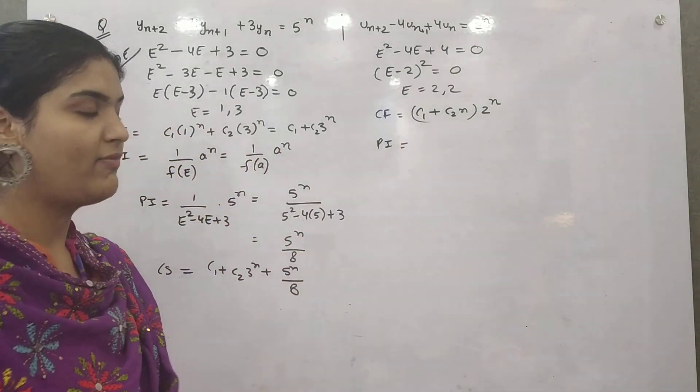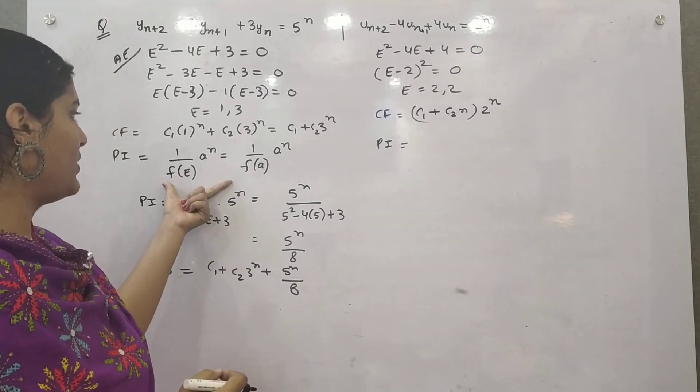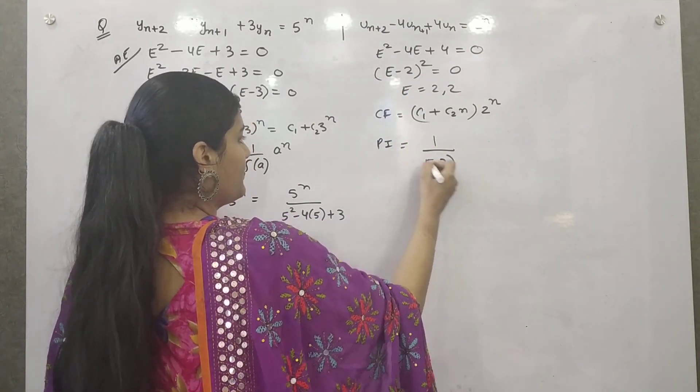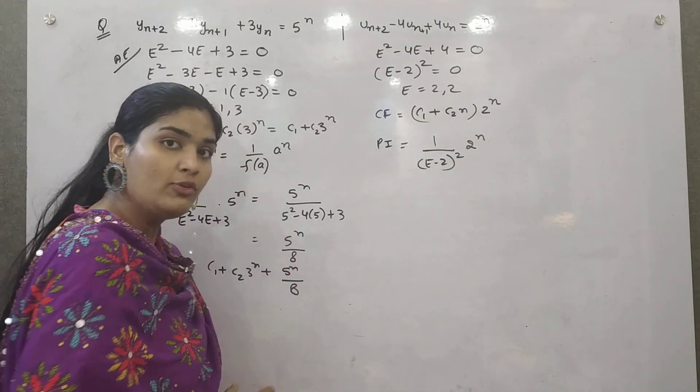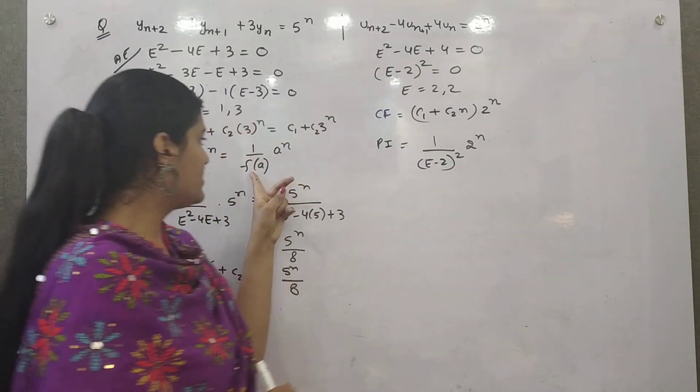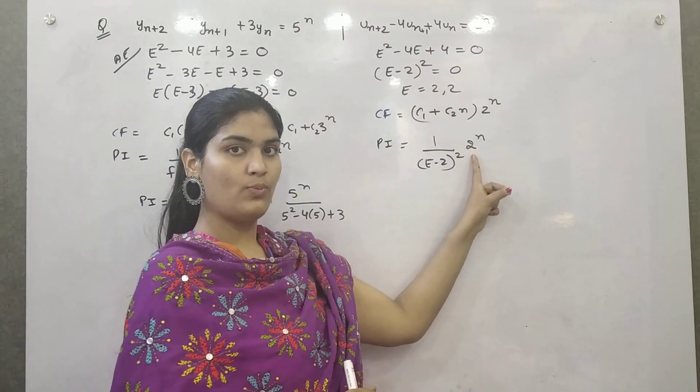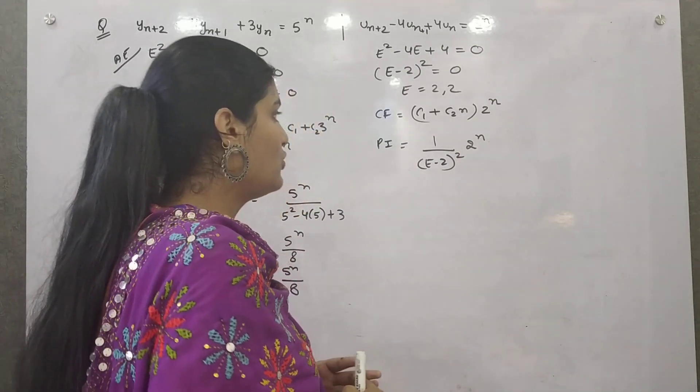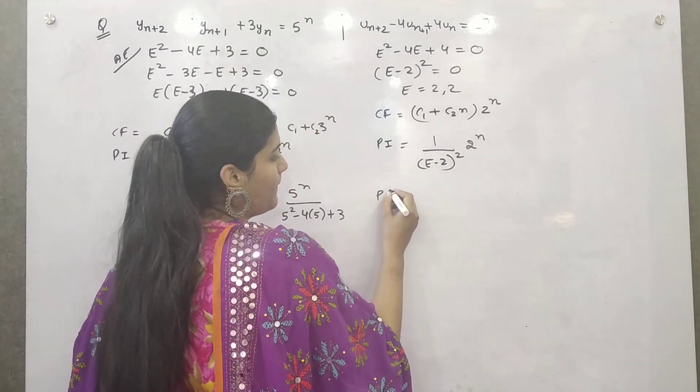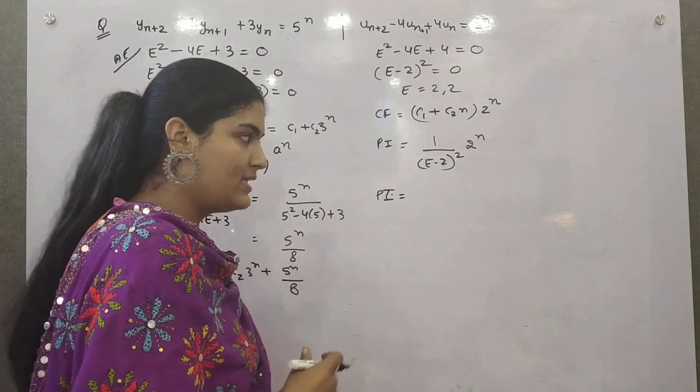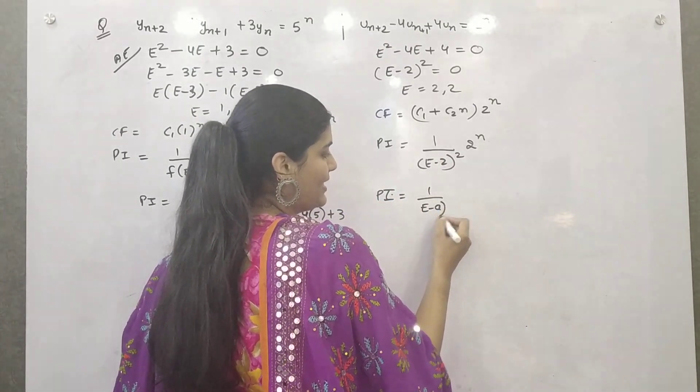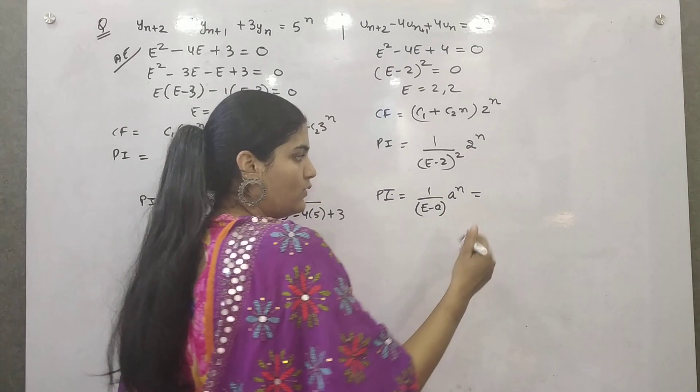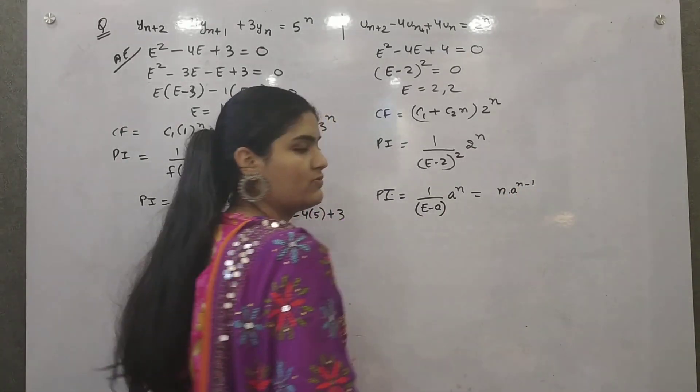Now if you want to find out particular integral, then the formula is this, right? Your equation is e minus 2 whole square. Now if you observe and put, according to this formula, a in place of e, a is 2. In place of e, 2 minus 2 is 0. Which is indefinite form, right? So what you need to do? I'm telling you the general equation. To solve such type of particular integrals in which you have the equation somewhat like this, then you will put a, a minus a will be 0. You have to take n into a raised to power n minus 1. This is the formula.